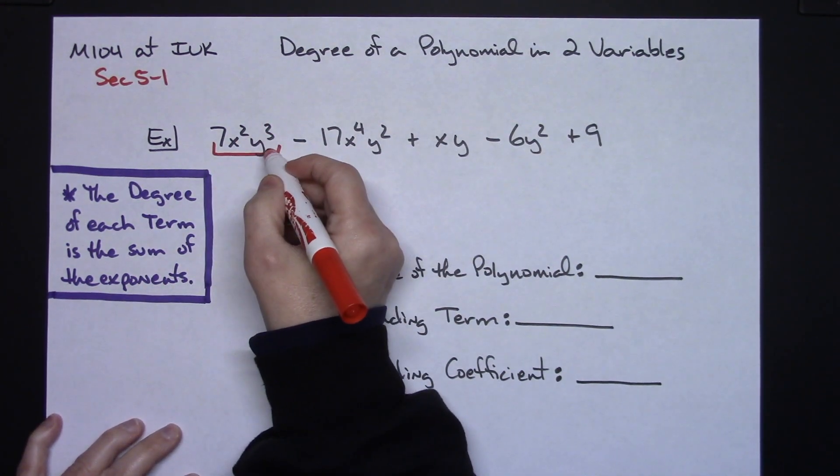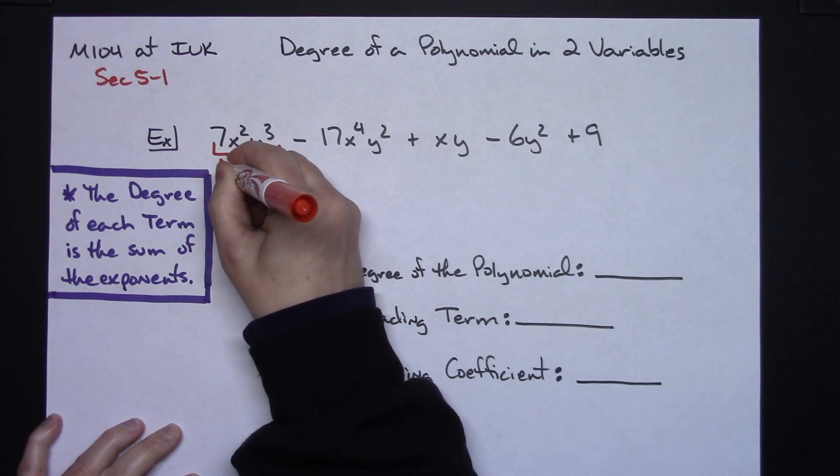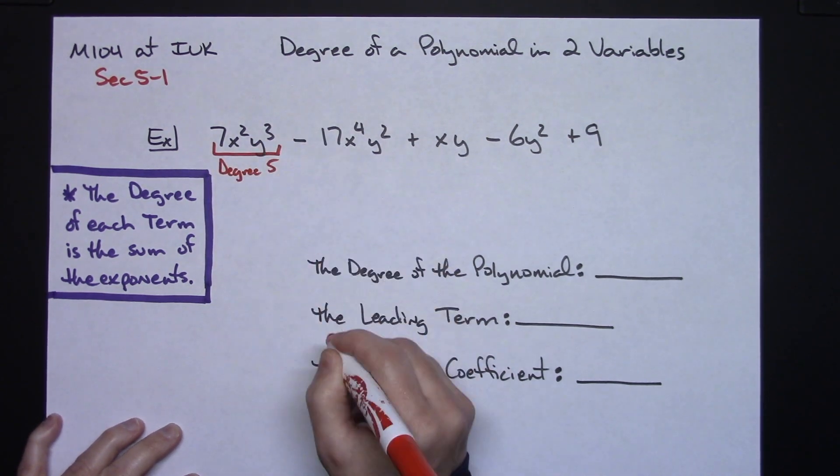So I take those exponents. I add them up. Two and three is five. So my degree of this first term is five.